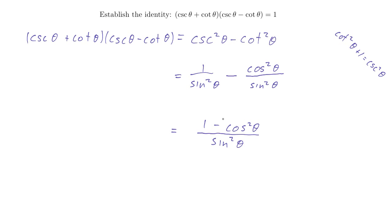And remember, in the previous one, we saw that 1 minus cosine squared theta was equal to just sine squared theta. Again, using the Pythagorean identity. So sine squared theta over sine squared theta is equal to 1, and that's what we were looking for.